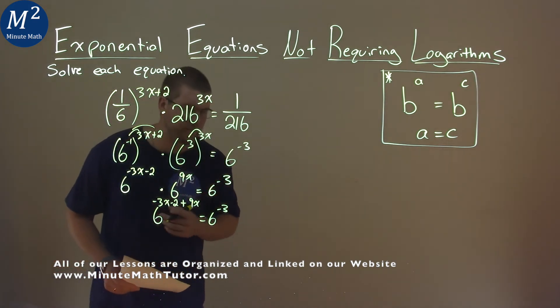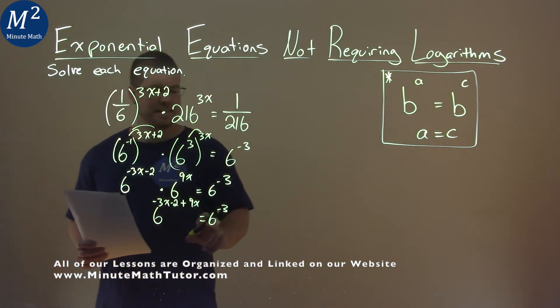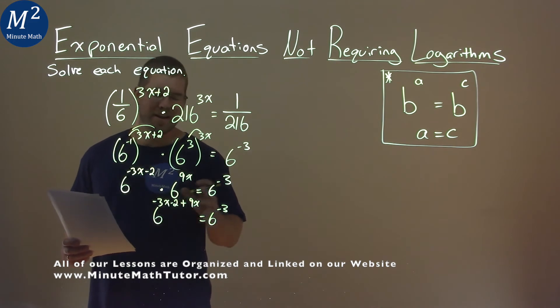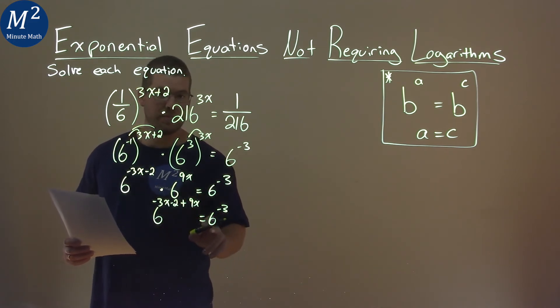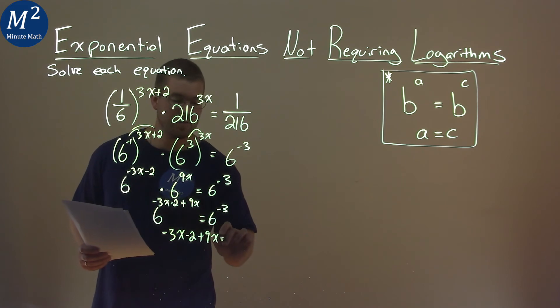Our last exponent rule: we have a 6 in the base, and it's on both sides of the equal sign. When that happens, we can set the exponents equal to each other. Negative 3x minus 2 plus 9x is equal to negative 3.